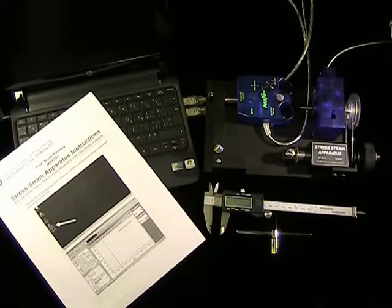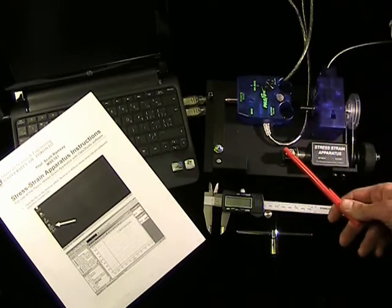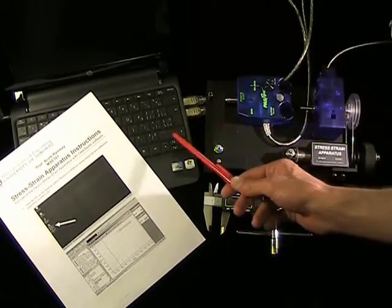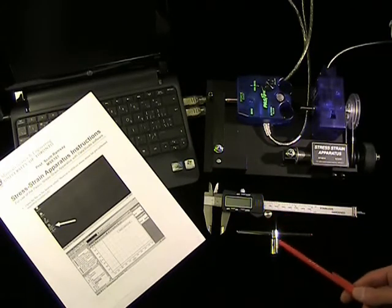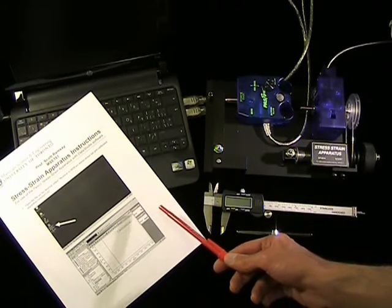Now I'm going to show you how to do part 2 of the procedure. At each stress-strain station, you'll find a stress-strain apparatus, a netbook computer, a digital caliper, a wrench, and the stress-strain apparatus instruction booklet.